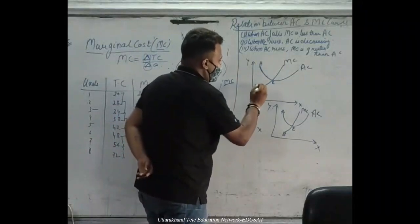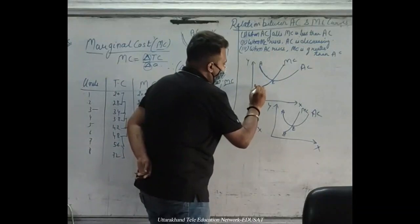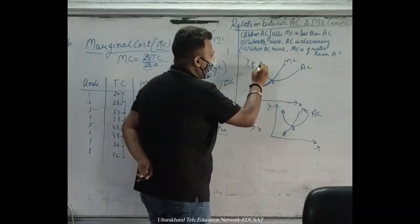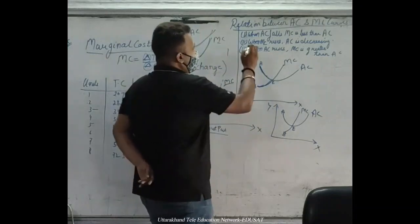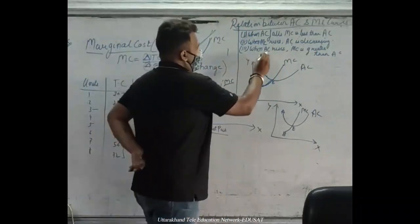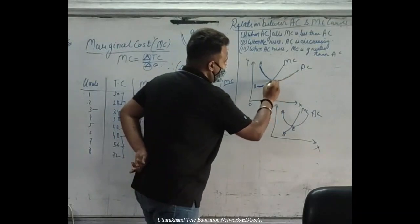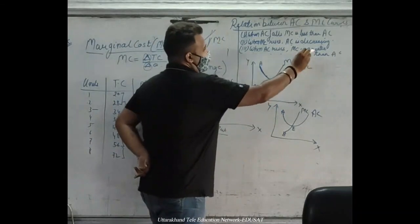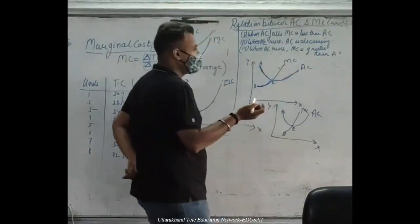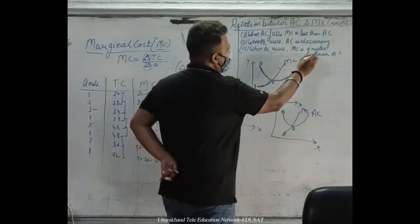When MC rises and comes from below AC, the AC is still falling. When MC rises above AC, AC is also rising. When AC rises, MC is greater than AC. If MC is lower than AC, then AC is less than MC.